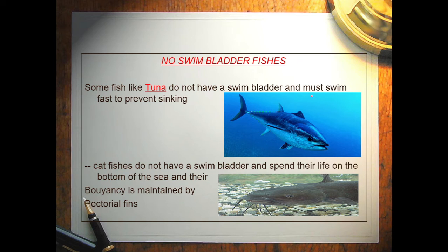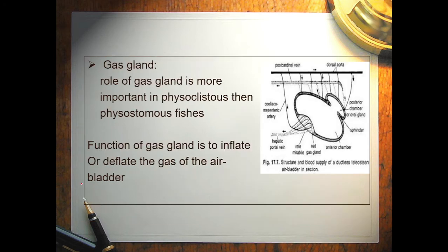Some fish do not have a swim bladder. For example, tuna do not have a swim bladder and must swim fast to prevent sinking. Catfishes also do not have a swim bladder and spend their life on the bottom of the sea, where their buoyancy is maintained by pectoral fins.